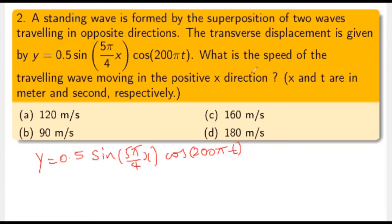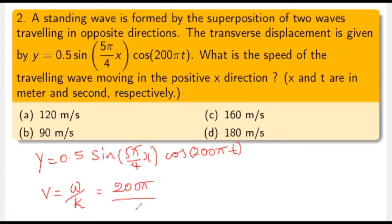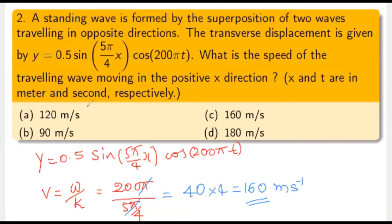It doesn't matter in which direction the wave is moving; the wave velocity always equals v = ω/k. From the equation, ω is the coefficient of t, which is 200π, and k is the coefficient of x, which is 5π/4. So v = 200π ÷ (5π/4) = 200 × 4/5 = 160 meters per second. Option C is correct.